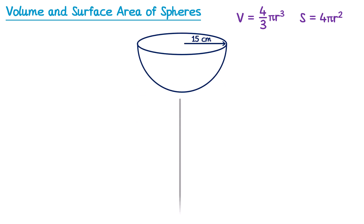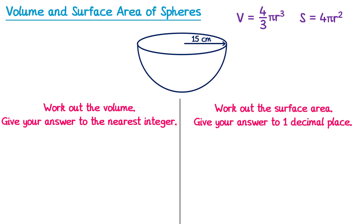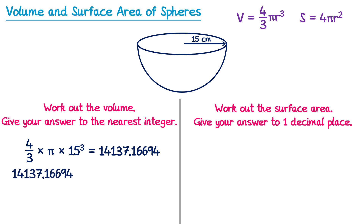Here's another hemisphere to try — work out the volume and surface area, paying attention to the required accuracy. For the volume, treat it as a whole sphere first: volume equals 4/3 multiplied by π, multiplied by 15 cubed. Then divide by 2 since it's a hemisphere. This question asks for the answer to the nearest integer, which means the nearest whole number, so the answer is 7069 centimeters cubed.